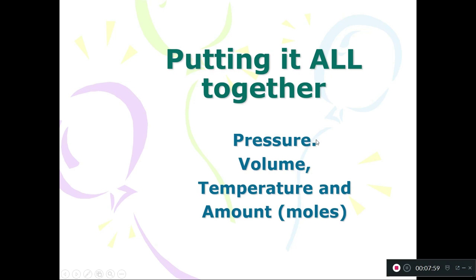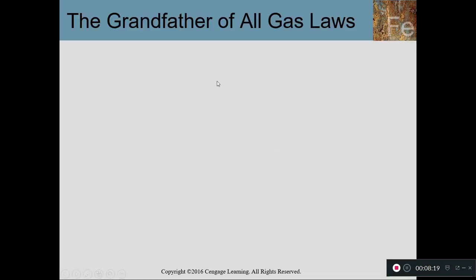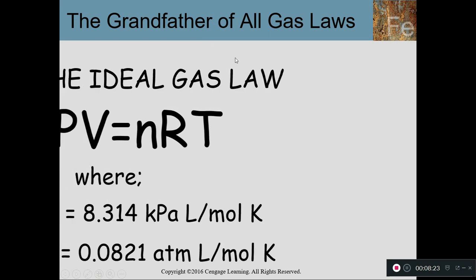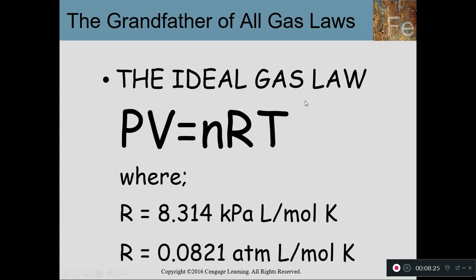Now we've seen gas laws incorporating pressure and volume, pressure and temperature, volume and temperature, and volume and number of molecules. Now we're going to incorporate all four variables into one very useful gas law called the ideal gas law — the granddaddy of all gas laws. It is called the ideal gas law: PV = NRT.